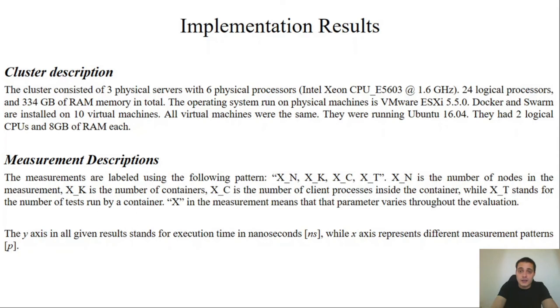At the end we have implementation results. Let's do the cluster description. The cluster consists of three physical servers which all have six physical processors, 24 logical processors and 334 gigabytes of RAM memory in total. The operating system is VMware ESX and it is run on a cluster. We have 10 virtual machines on the cluster and they all have Docker and Swarm installed. All virtual machines are the same and they are running Ubuntu 16.04. All virtual machines have two logical CPUs and 8 gigabytes of RAM each.